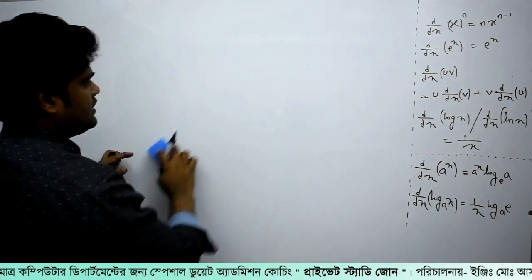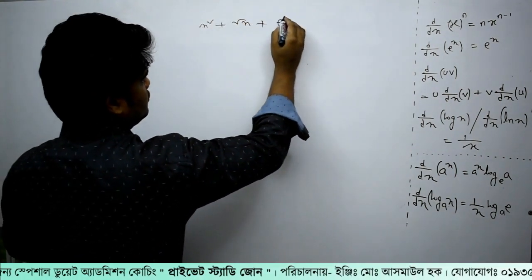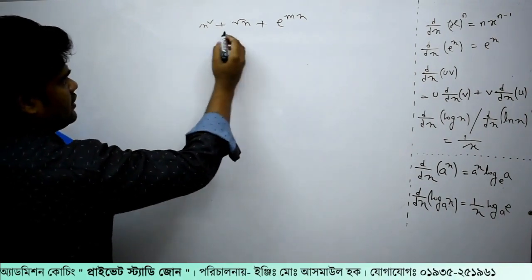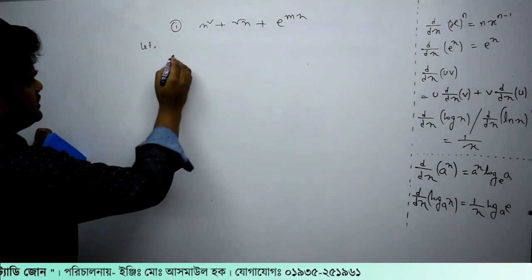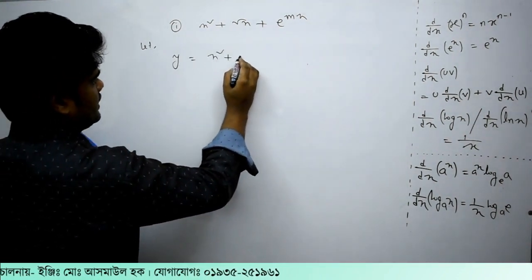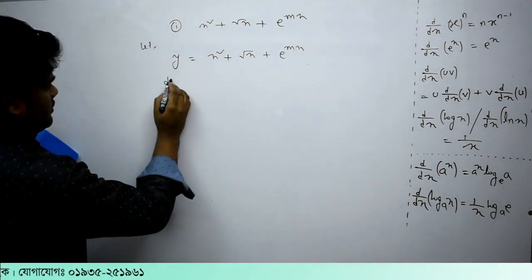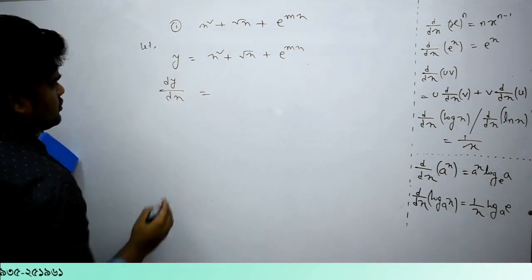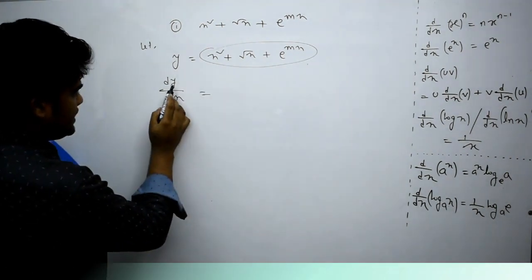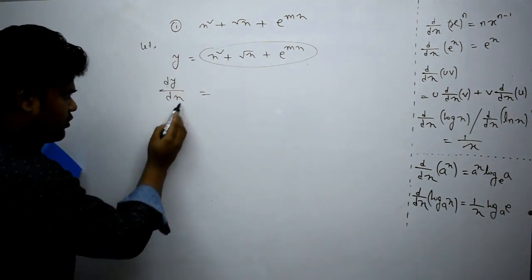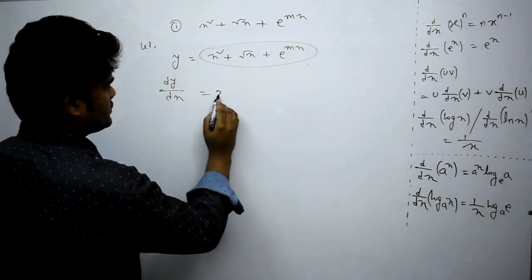I will say y is equal to x squared plus root over x plus e to the power mx. It is a differentiation. Let y equal to x squared plus root over x plus e to the power mx. Differentiation — dy by dx. x squared differentiation is 2x.